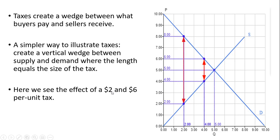We can see the effect of both a $2 and a $6 per unit tax. With the $2 tax, the vertical wedge is $2 — buyers pay $6 and sellers receive $4. If we look at a $6 per unit tax, we find a vertical wedge that is six units long, and in that case buyers would be paying $8 and sellers would only be receiving $2.